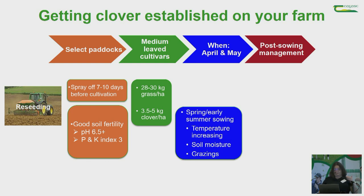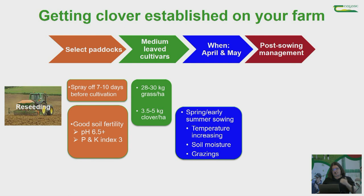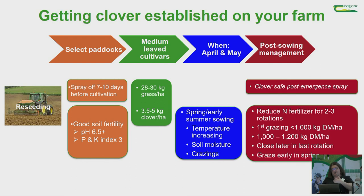April–May timing works because you're on an increasing temperature plane, there's still moisture in the soil, and there's plenty of opportunity to get multiple grazings in before closing for winter. Importantly, going early gives a wider window to get the clover-safe post-emergent spray out — the later you go into autumn with reseeding, the less opportunity you have for weed control. The best opportunity to control weeds in your swards is at reseeding time.